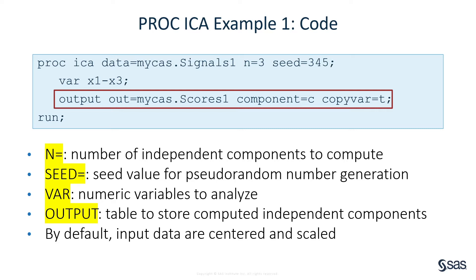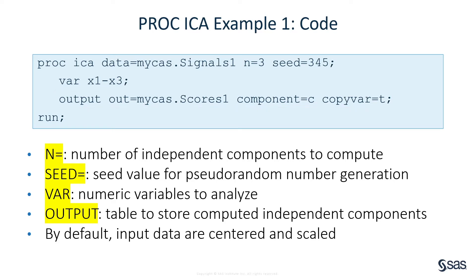The copy var equals option transfers the time index variable t from the input data table to the output data table. By default, PROC ICA centers and scales the input data.